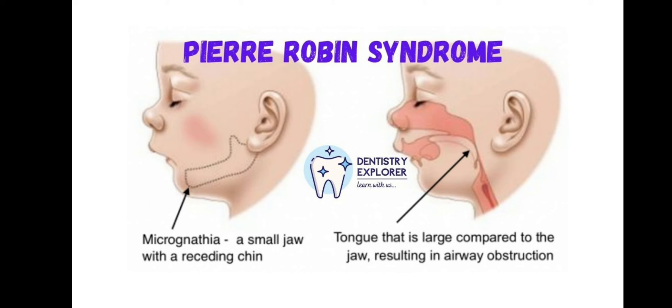The picture depicts micrognathia — a small jaw with a receding chin, and a tongue that is large compared to the jaw, resulting in airway obstruction.